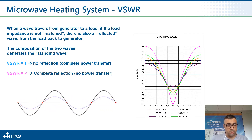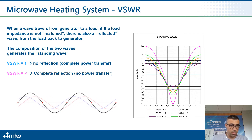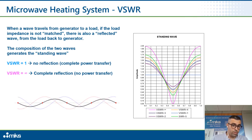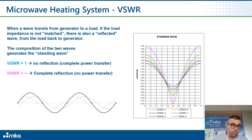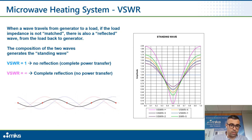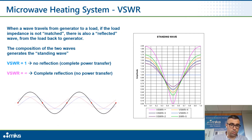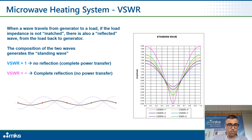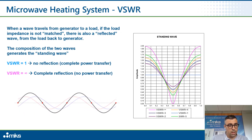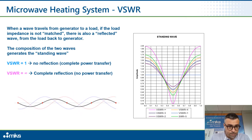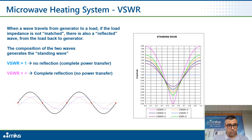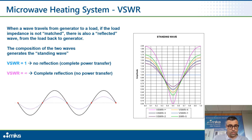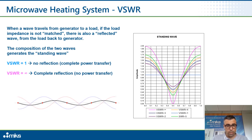When a wave travels from generator to a load, if the load impedance is not matched, there is also a reflected wave from the load back to the generator. If this parameter is equal to 1, we have no reflection — complete power transfer. If this parameter is high, we have a lot of reflection, so that means no power transfer.